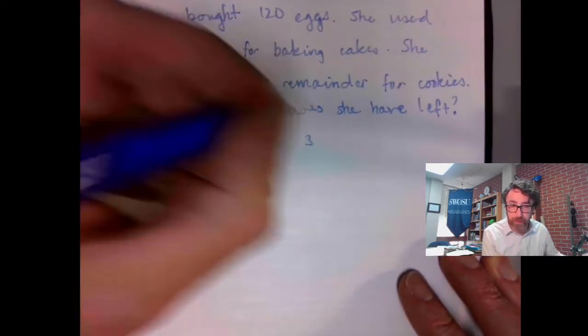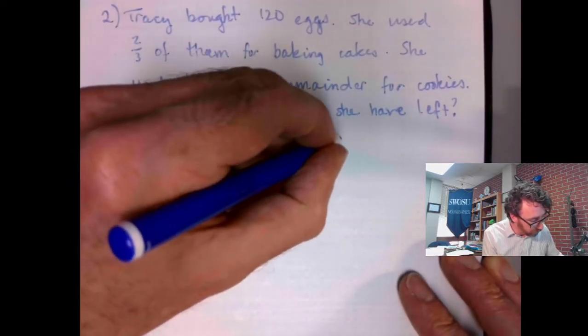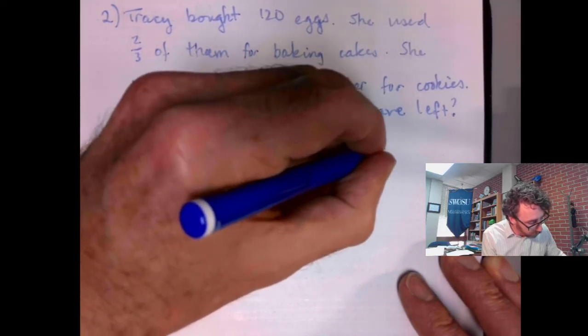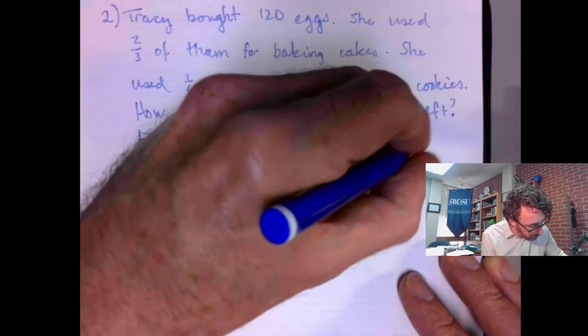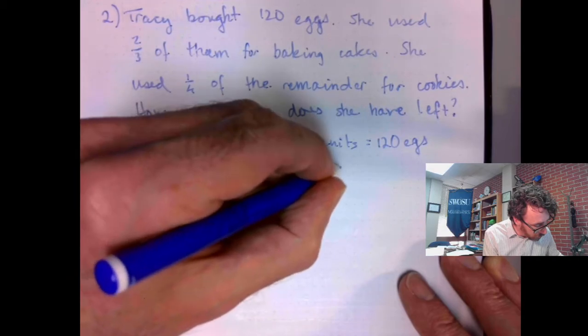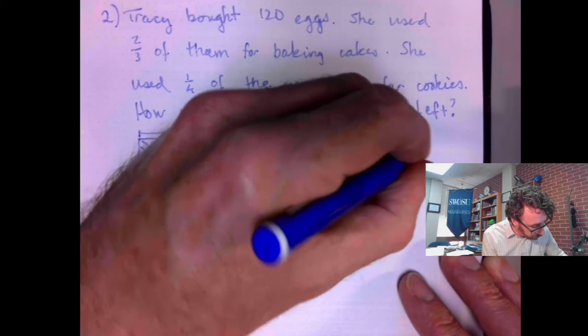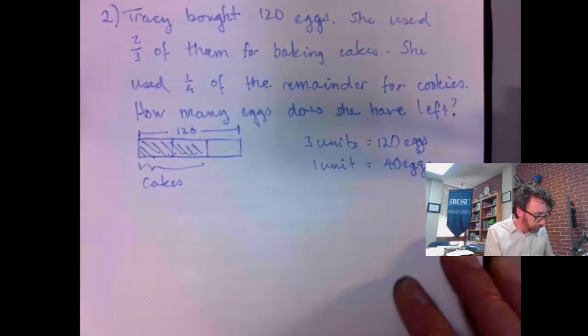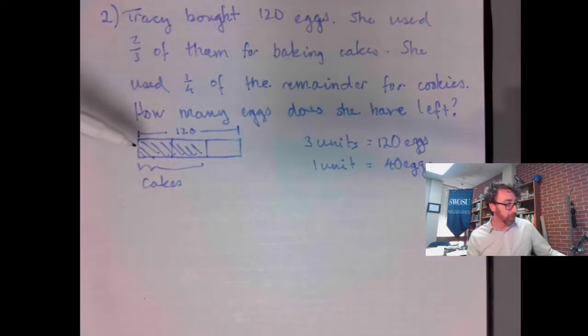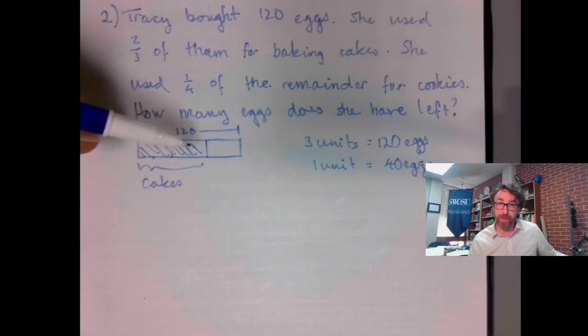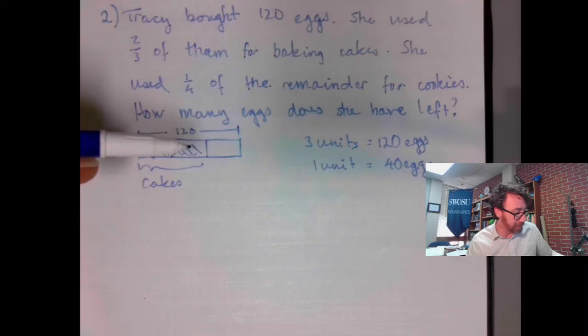I can do some calculations over here. Three units in the bar diagram equals 120 eggs, so one unit would be 40 eggs. She had 120 eggs. She used two-thirds of them, which leaves her with 40 eggs left.